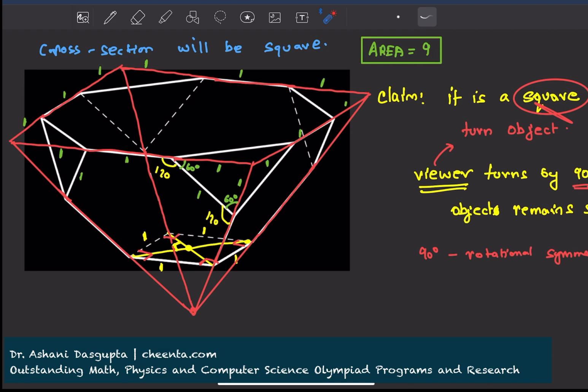Similarly, if you want to create a concrete solution, a rigorous solution, you should be giving some sort of an argument. Anyway, coming back to the solution, this square has area 9.